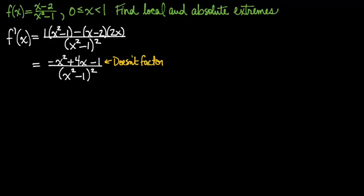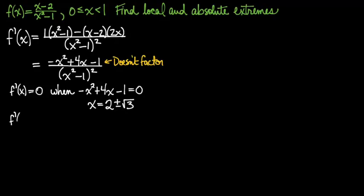Now I need critical points. I need points that are interior points of the domain where f prime is equal to 0 or doesn't exist at all. Now my derivative is a rational function, and so it's equal to 0 when the numerator is 0. I can use the quadratic formula, and I get two roots.